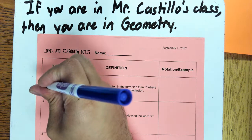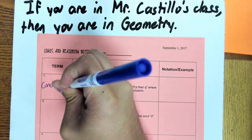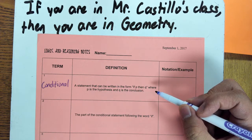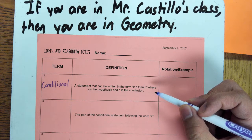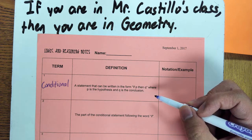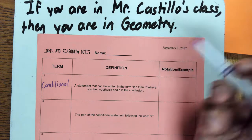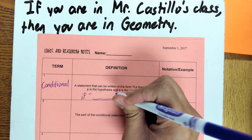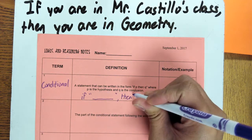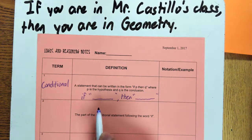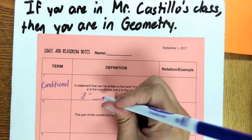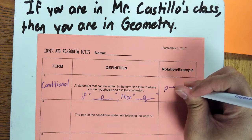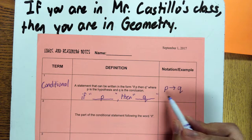Our first term is conditional. The formal definition is a statement that can be written in the form if P then Q, where P is a hypothesis and Q is a conclusion. The formal definitions are rather lengthy and sometimes hard to read, so the short version is: a conditional statement says if blank, then blank. Since we are in math class, we use variables — P for the first blank and Q for the second. The notation is P arrow Q, and we read this as P implies Q.